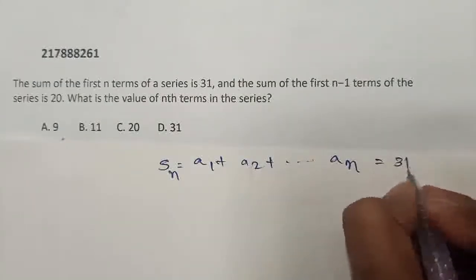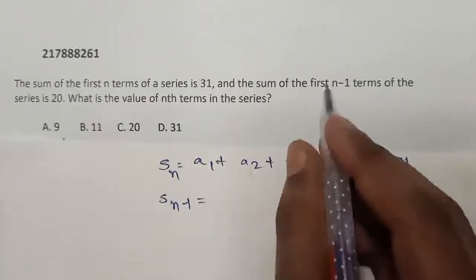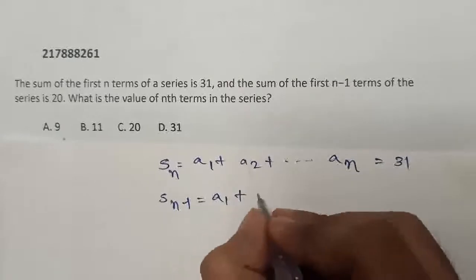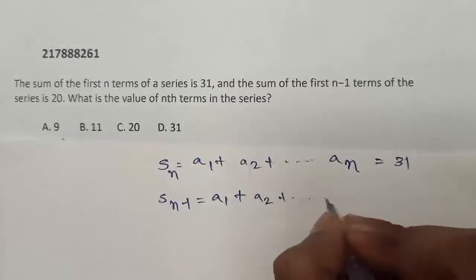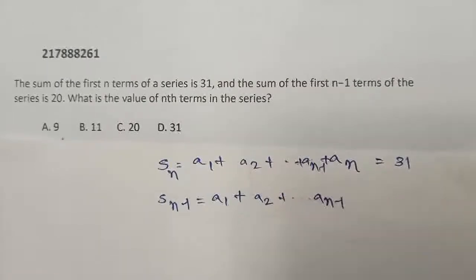Now, this is equal to 31 and suppose the next sum is Sₙ₋₁. Sₙ₋₁ sum of first n-1 terms, so this would be a₁ being the first term, a₂ being the second term. So, this will continue up to aₙ₋₁.